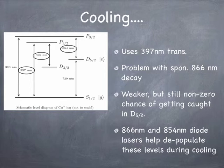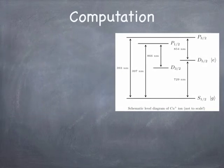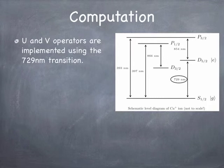If you're going to do any calculation, you have to turn those guys off because they would completely spoil the calculation. If the 854 laser were on, it would be stealing population from the 5/2 state and throwing it into the P3/2, which would immediately decay to the ground state. That would be an artificial route of transition, so you'd have to turn those two guys off. To actually do any calculations, we use the S1/2 and D5/2 state and the 729 nanometer laser line.